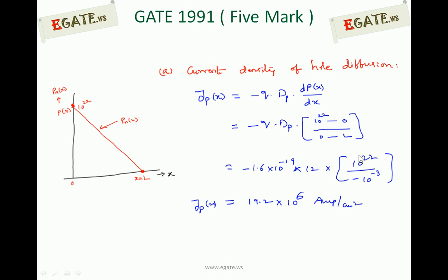So this gives us Q equal to 1.6 into 10 to the power minus 19, DP equal to 12, and 10 to the power 22 divided by minus 10 to the power minus 3, since L is 10 to the power minus 3. The two negatives cancel, giving a current density of 19.2 into 10 to the power 6 ampere per centimeter square.